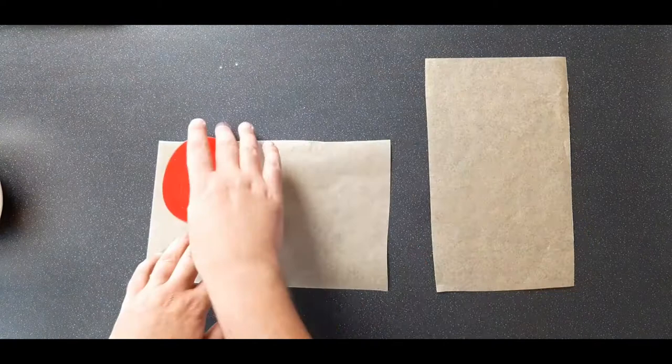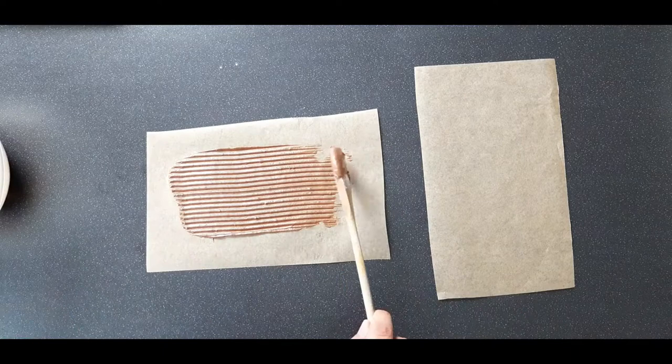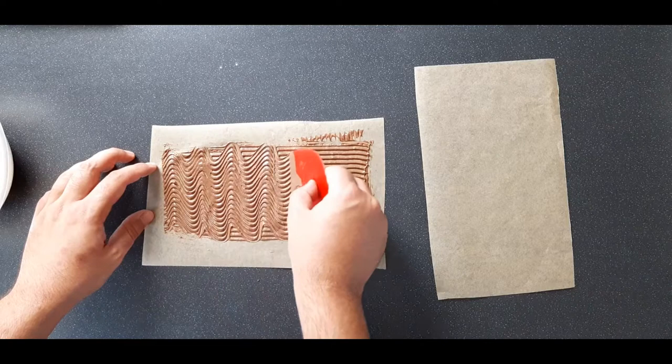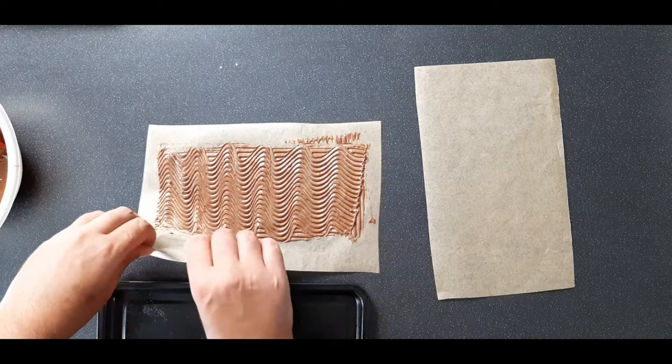Now with this, I'm going to show you a couple of different designs you can do. The first one is with a tooth scraper. Spread some mixture onto a piece of baking paper, spread it out, and then just make a zigzag pattern across. Place this onto a baking sheet and into your freezer for at least an hour until frozen.